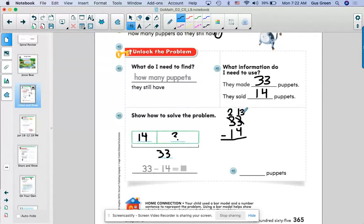So I have now regrouped to 10. So instead of three tens and three ones, I have two tens and 13 ones. And now I can go ahead and subtract. 13 minus four is nine. And two tens take away one 10 leaves me with 19. So now I know there are 19 puppets unsold. They started with 33. They sold 14 and they have 19 left.